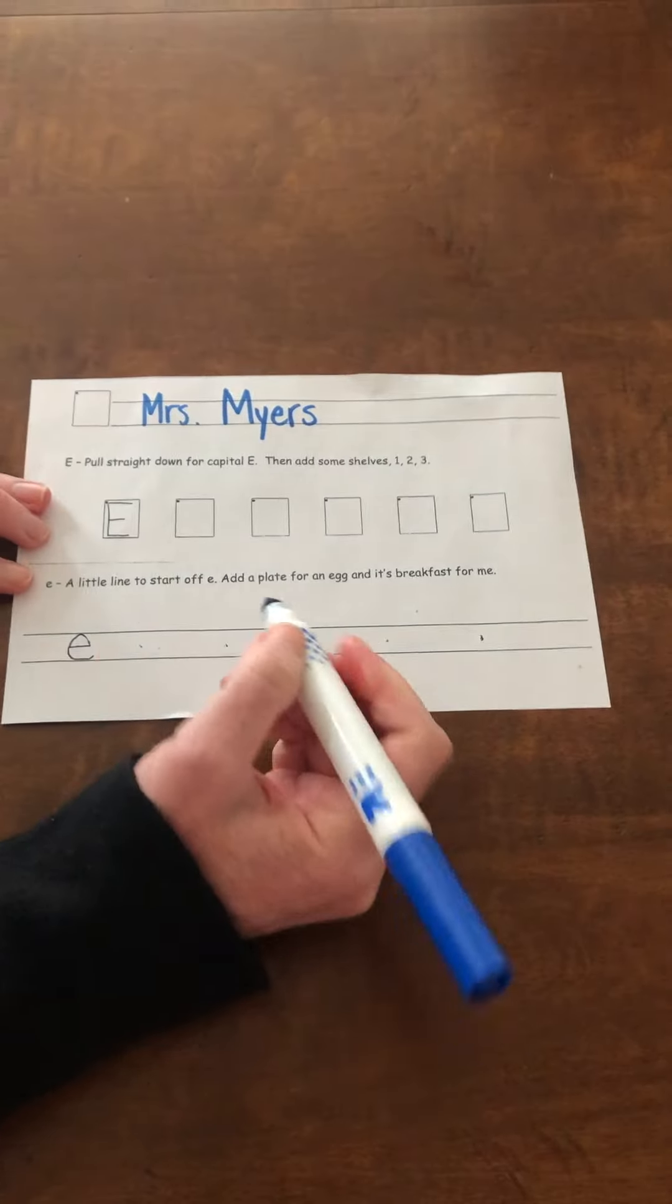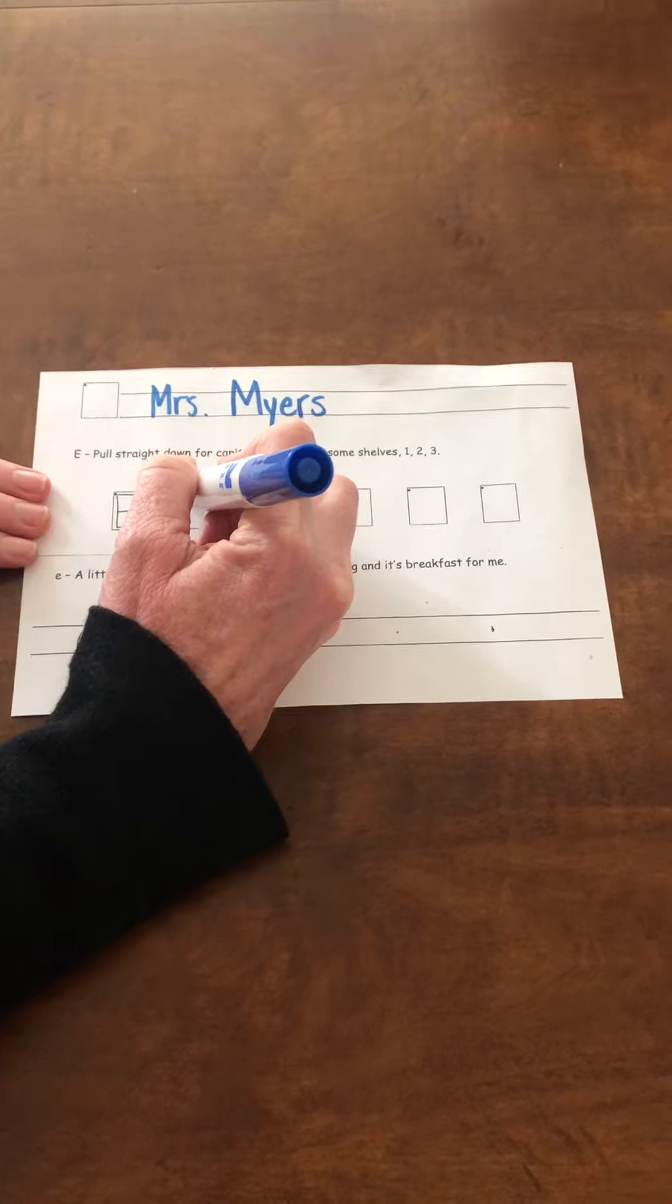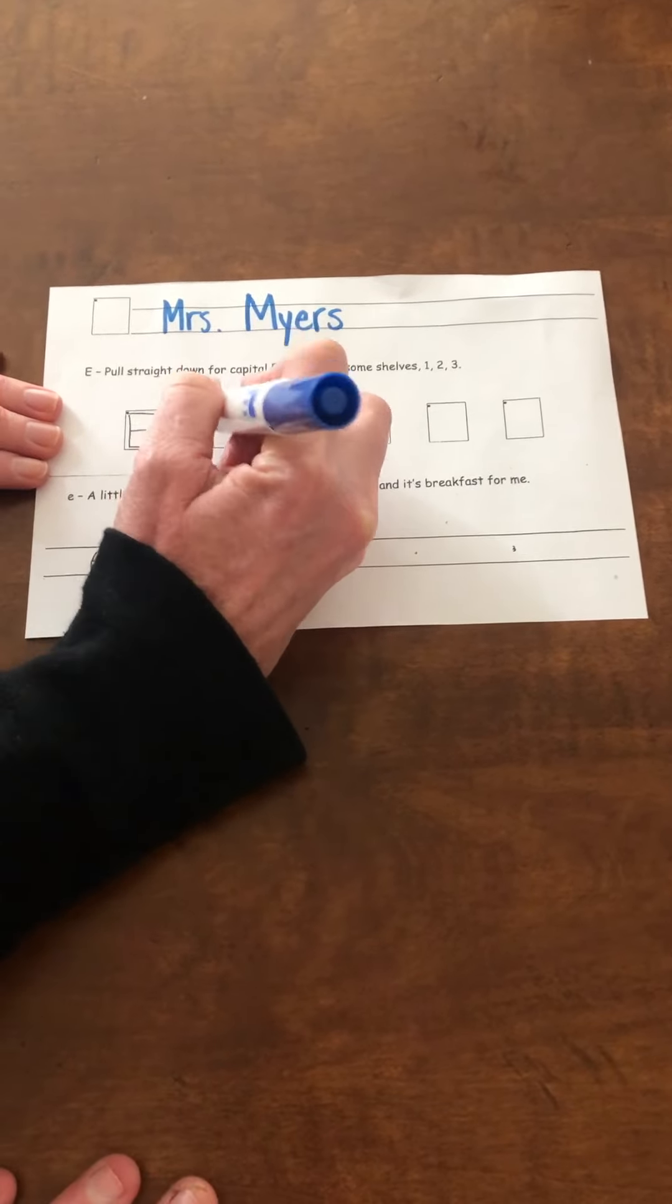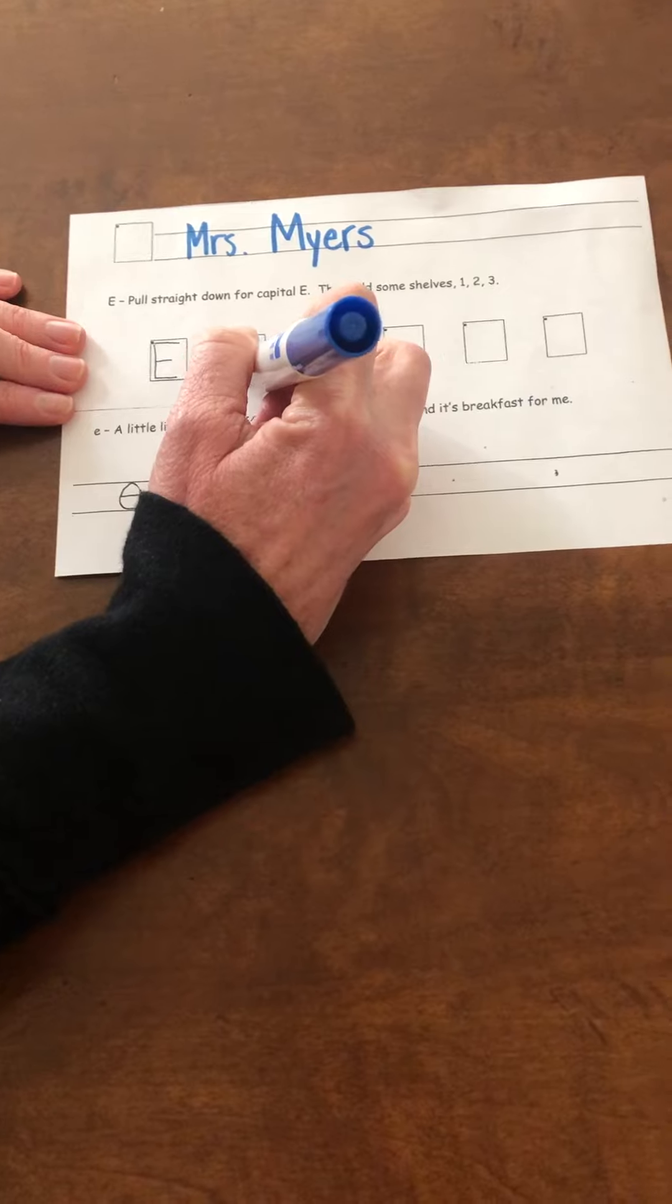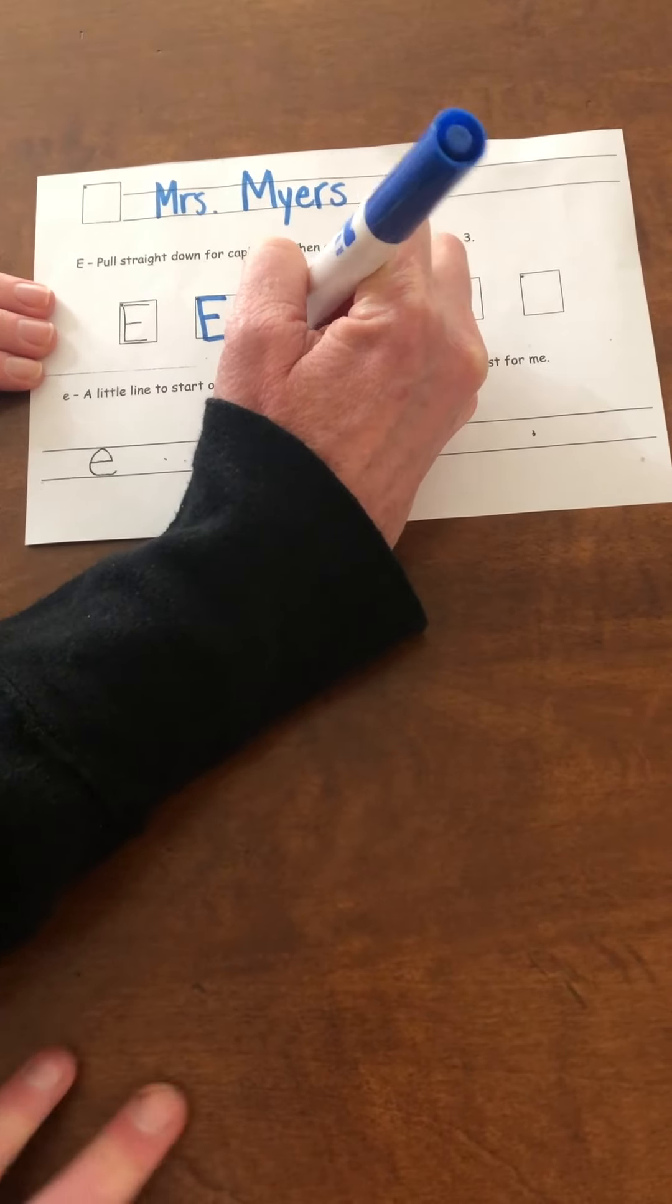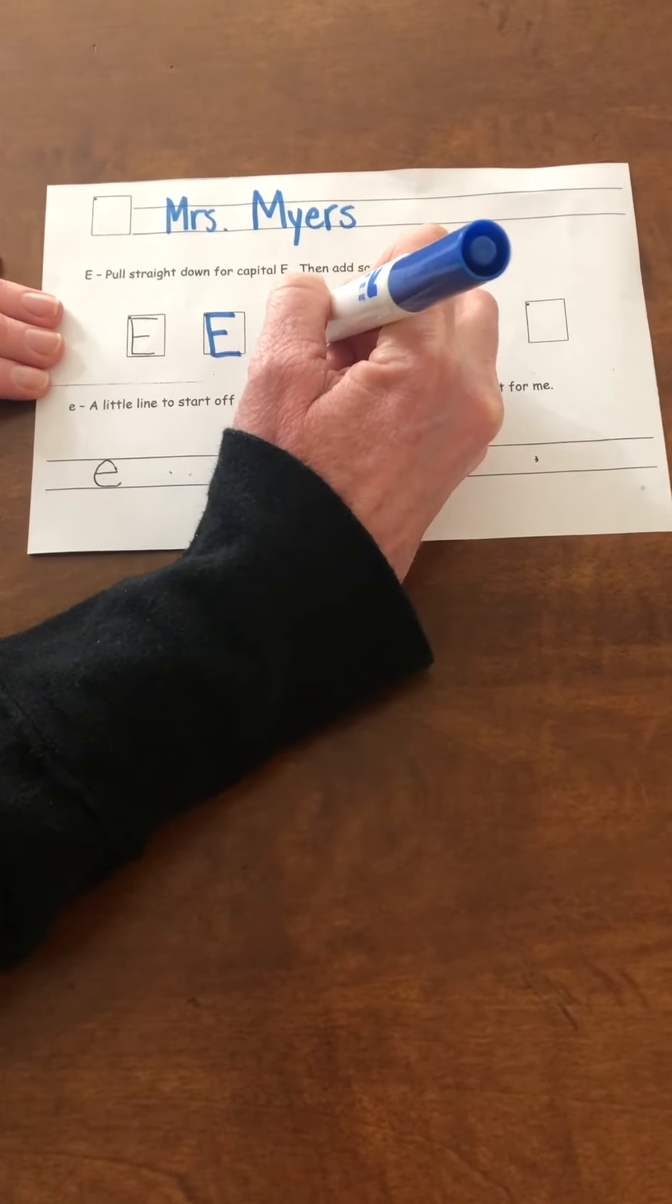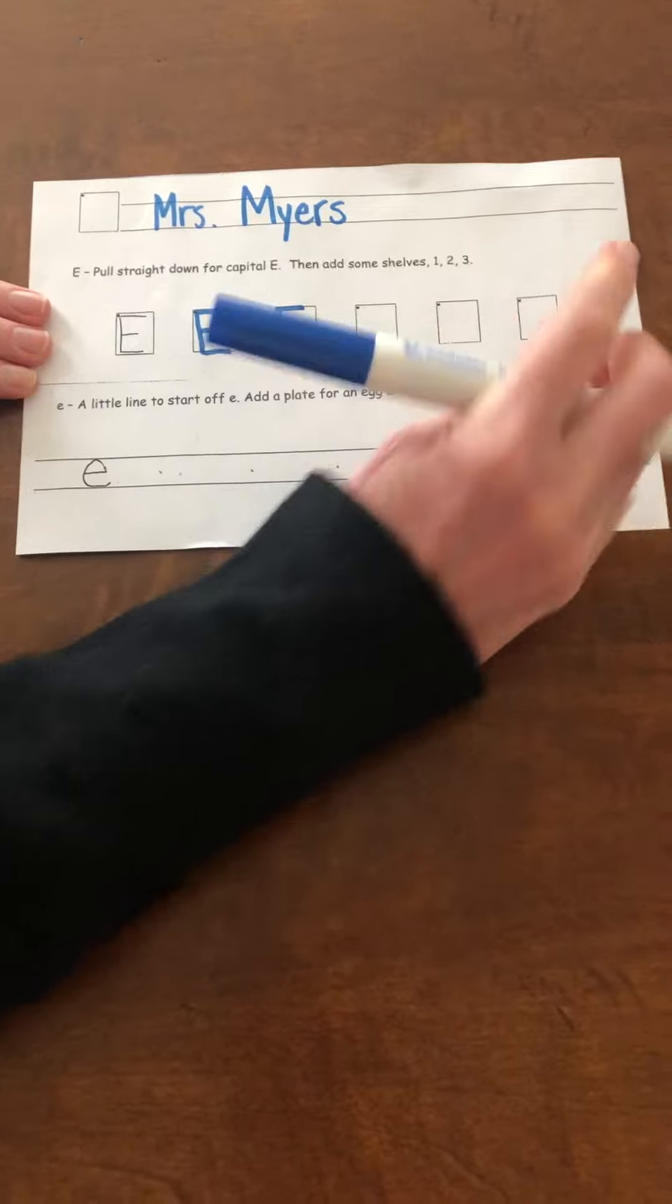Then you're going to work on your capital E's. There's a dot so you know where to start. Make a straight stick down, then give yourself a hat, a belt, and shoes. Straight stick down, hat, belt, shoes. Fill in all the boxes.